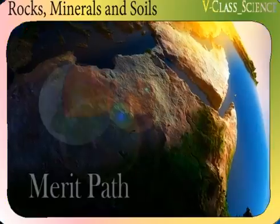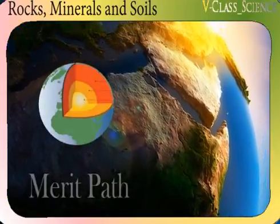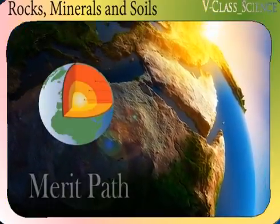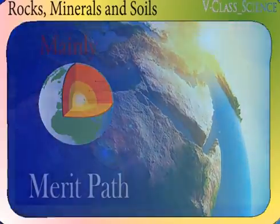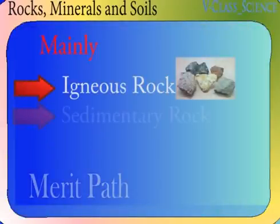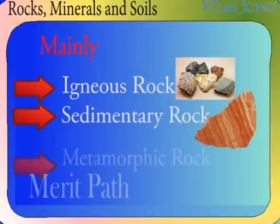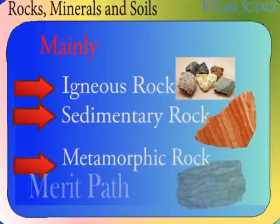The earth's crust has three main types of rocks: mainly the igneous rock, the sedimentary rock and the metamorphic rock.